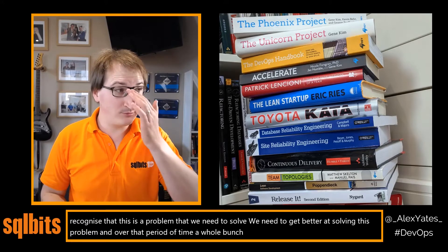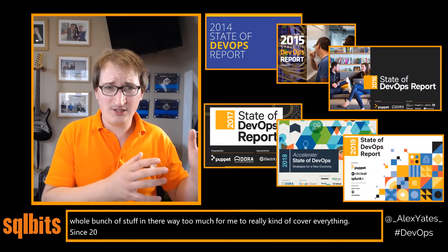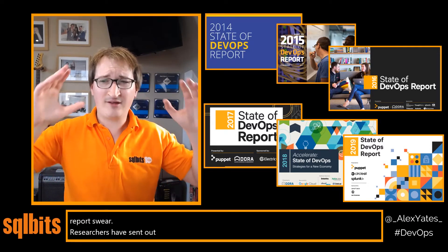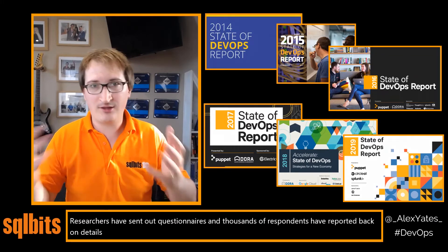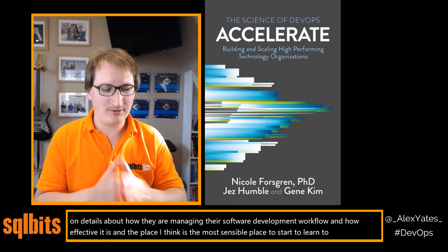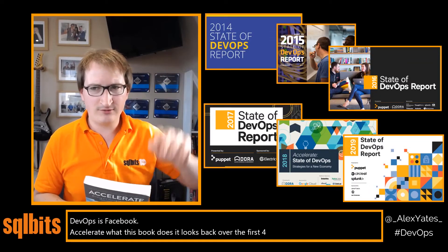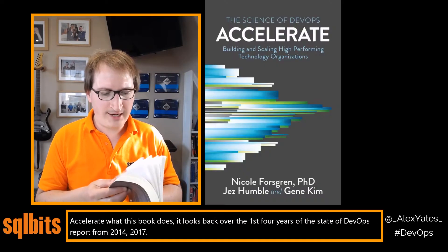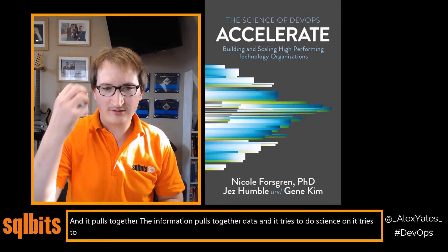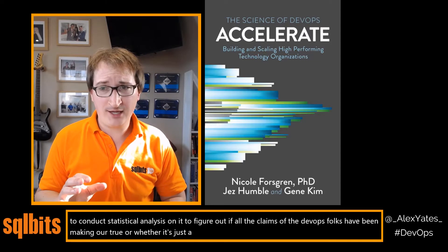By the time we got into the noughties we were recognising this as a problem we needed to solve, and over that period a whole bunch of amazing books were written. Since 2014 there have been State of DevOps reports where researchers sent out questionnaires and thousands of respondents reported back on how they're managing their software development workflow and how effective it is. The best place to start is the book Accelerate, which looks back over the first four years of those reports — 2014 to 2017 — pulls together the data, and tries to do science on it through statistical analysis to figure out if all the claims DevOps folks have been making are true. Long story short: it is true.